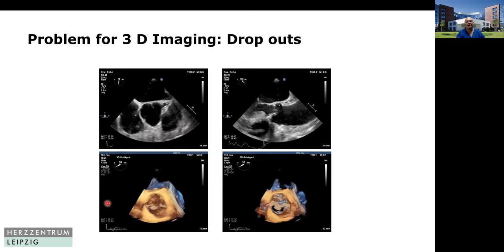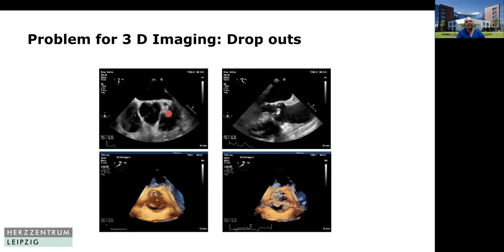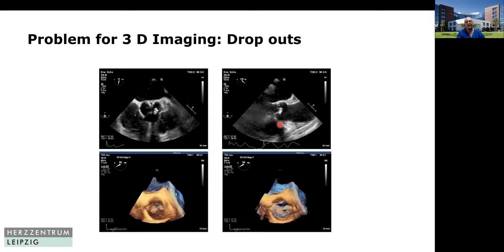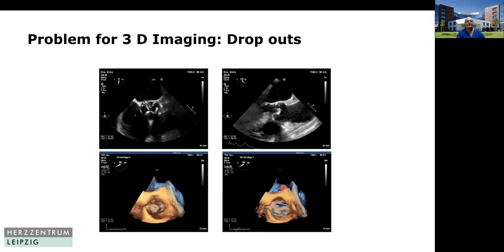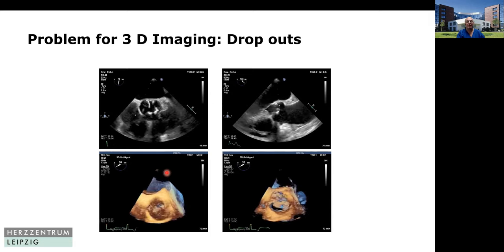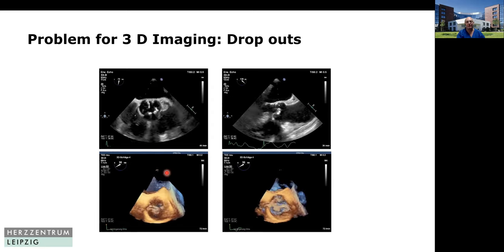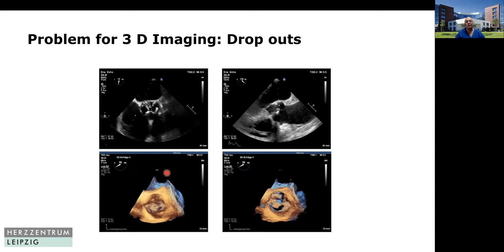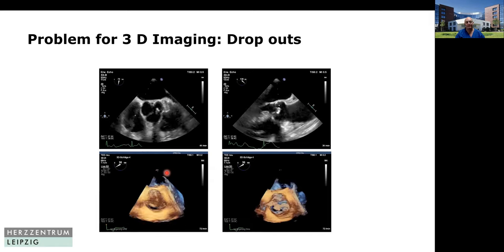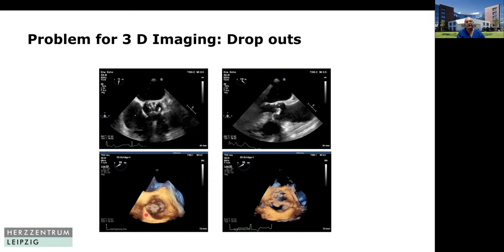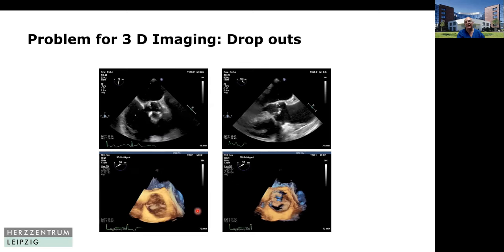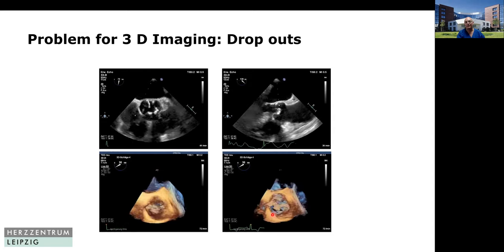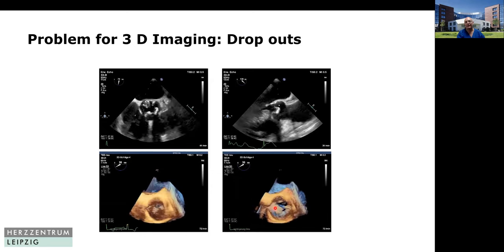Another problem for 3D imaging of the aortic valve is drop-outs — drop-outs due to calcification. The drop-outs in 2D, like shadowing, also appear in the long axis, and you have the drop-outs in 3D because 3D is based on 2D imaging. If the 2D image is not good or has drop-outs, then you will have drop-outs in 3D as well. In 3D imaging, if you increase the gain you hardly see anything. If you decrease the gain, like in this image, you see a lot of holes caused by drop-outs due to calcification.